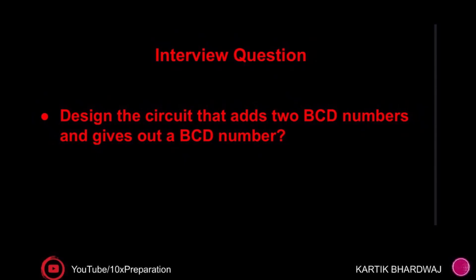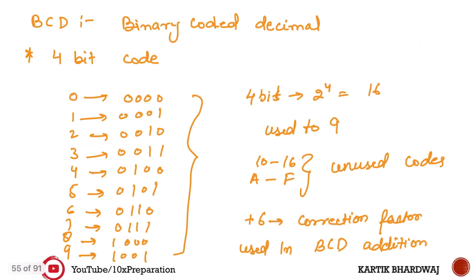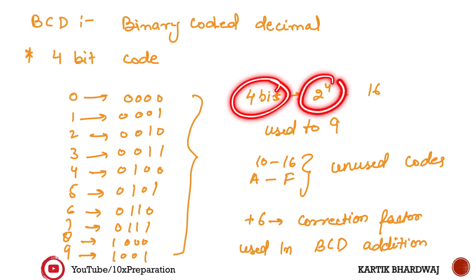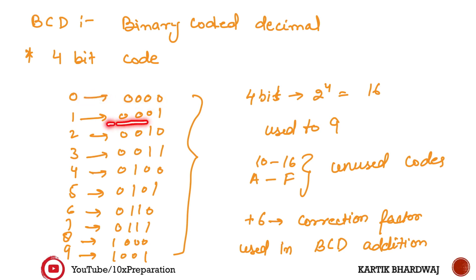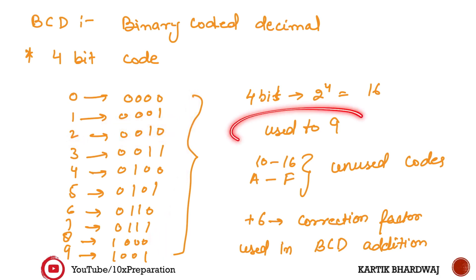In this lecture we are going to design a circuit where two BCD numbers can be added and the output is also in BCD form. BCD stands for Binary Coded Decimal and is represented in 4 bits. With 4 bits, 2 to the power 4 gives 16 combinations, but only 0 to 9 are used. So 0 is assigned 0000, 1 is 0001, 2 is 0010, and so on up to 9. The values 10 to 15 (A to F in hexadecimal) are known as the unused or invalid states.